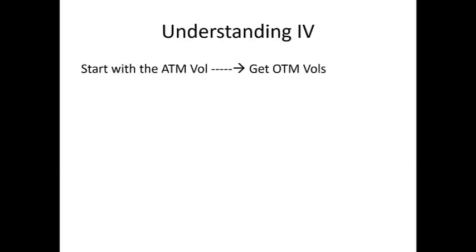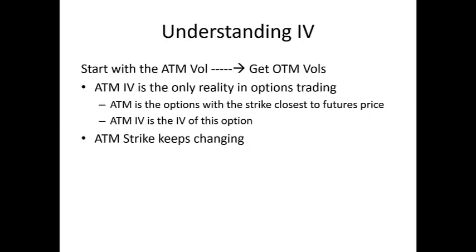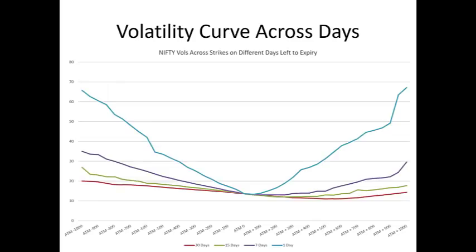To make intelligent assumptions on IV, we first need to understand the foundation of all volatility, which is ATM volatility. ATM, or at-the-money option, is the option whose strike is closest to the current futures price of the same expiry. ATM volatility is the volatility of that option. We start with ATM volatility and then derive the volatility of whichever strike we want. The ATM strike keeps changing — one day it could be 10,600, the next day 10,700.